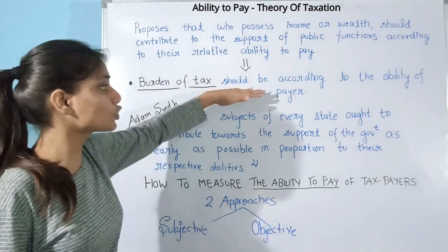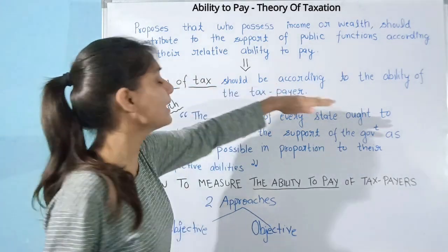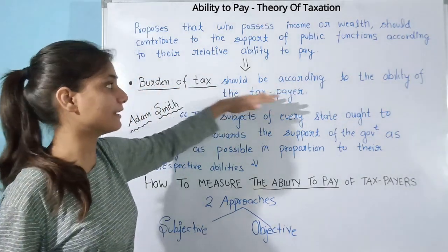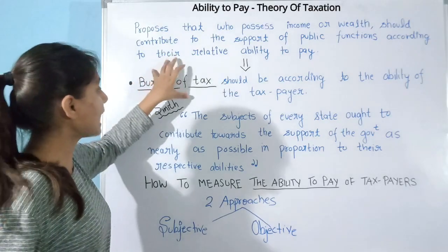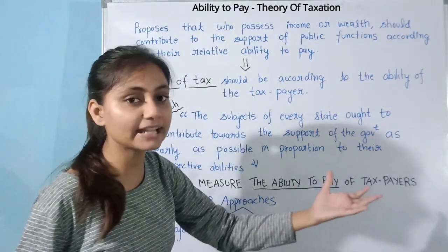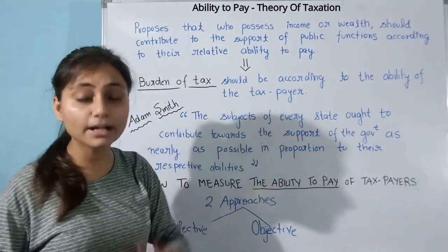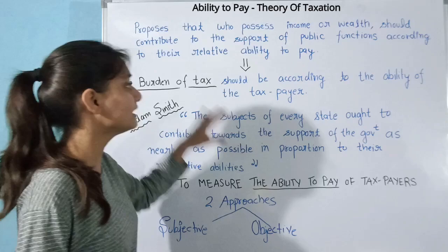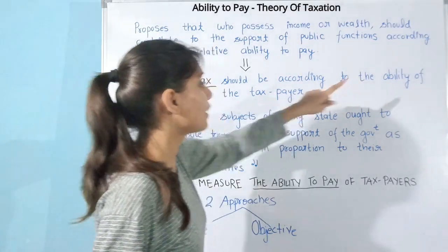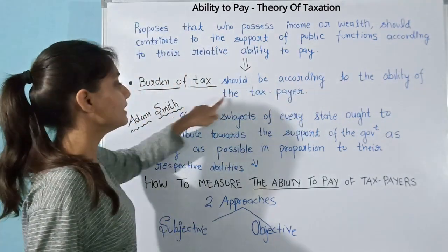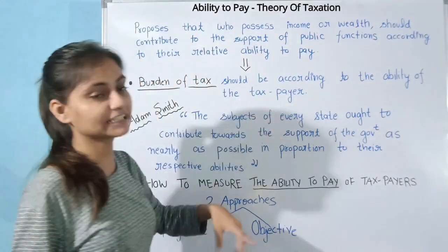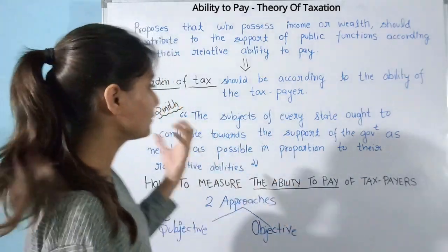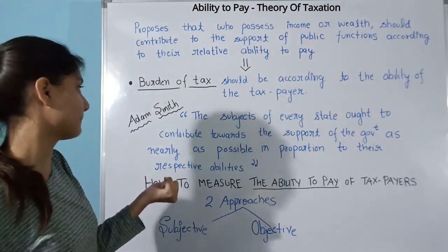The burden of tax should be according to the ability of the taxpayer. Who pays more tax, who pays less tax, who pays no tax — all of this should be determined according to the ability of the taxpayer, based on their capacity to pay.